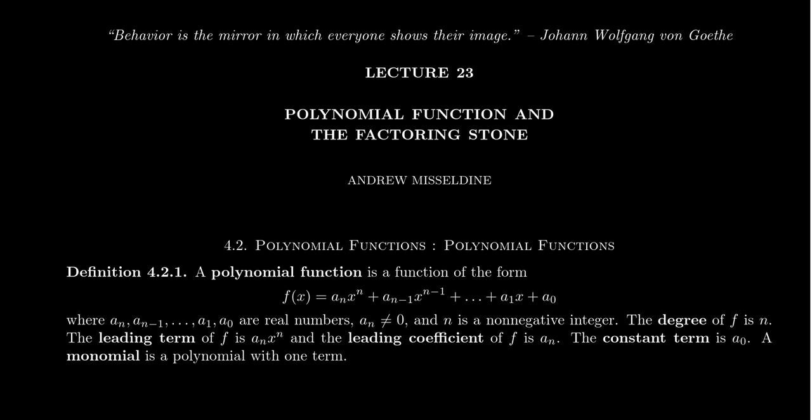A polynomial function is a function of the form f of x equals a sub n x to the n plus a sub n minus 1 x to the n minus 1, plus the next terms, all the way down to a 1 x plus a sub 0 here. So really what we want to think of is a polynomial is just going to be a collection of monomial functions.